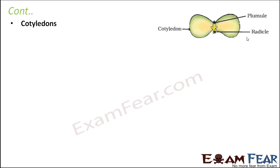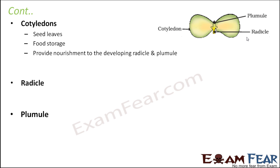Externally you can see the seed coat, hilum, and micropyle. Inside that you see the embryo, which is made up of cotyledons, radicle, and plumule. Cotyledons are nothing but the seed leaves — they are used for food storage because the embryo needs food. They provide nourishment to the developing radicle and plumule, since the radicle needs to grow into a root system and the plumule into a shoot system, and that energy comes from the food stored in the cotyledons. The radicle is the embryonic root and the plumule is the embryonic shoot.